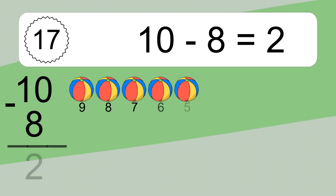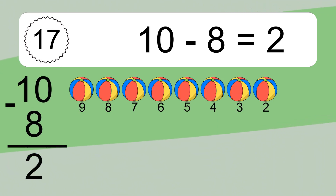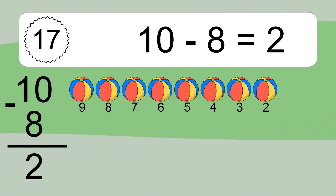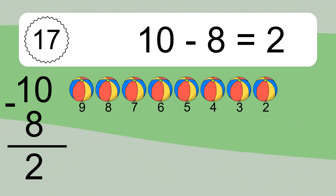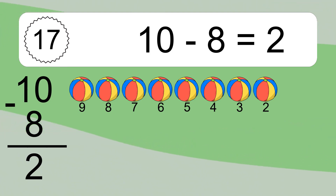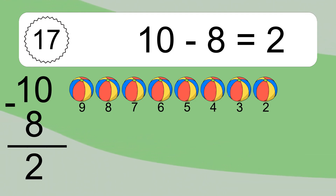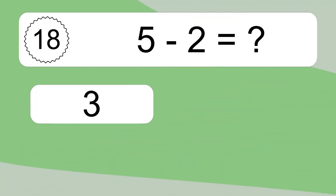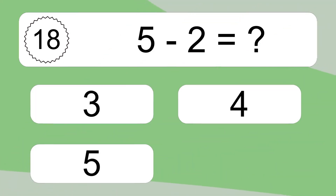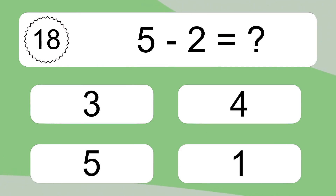10 minus 8 equals what? 10 minus 8 equals 2. Let's count it! 9, 8, 7, 6, 5, 4, 3, 2.